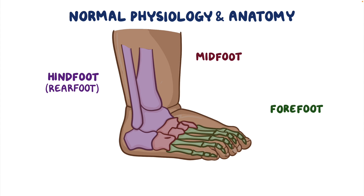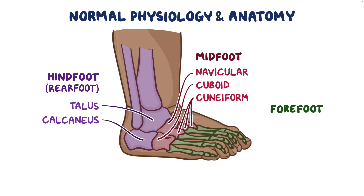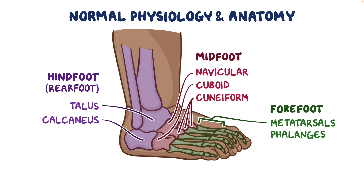The hindfoot includes two bones: the talus and the calcaneus. The midfoot includes the navicular bone, the cuboid bone, and the cuneiform bone. Finally, the forefoot consists of metatarsals, which are the long foot bones, and the phalanges, which are the toe bones.